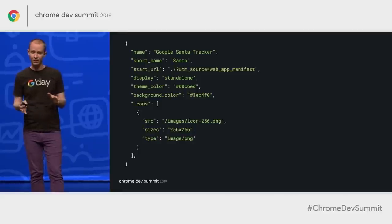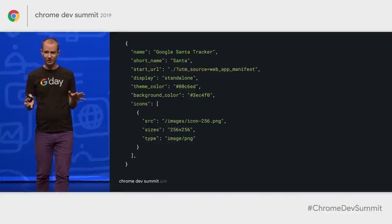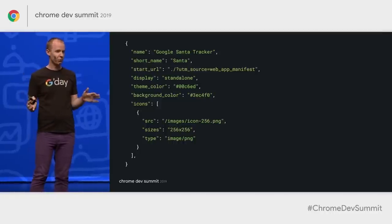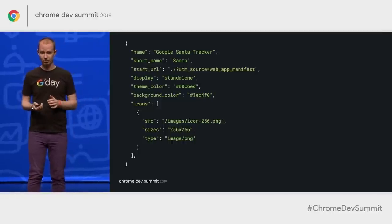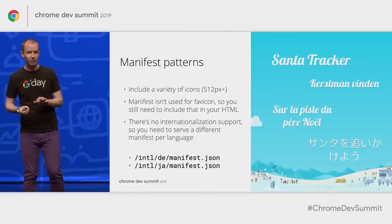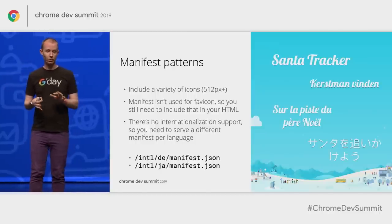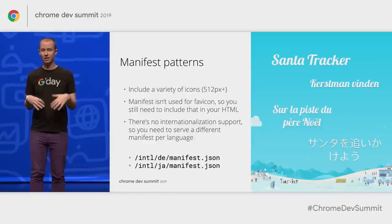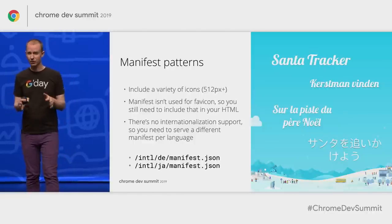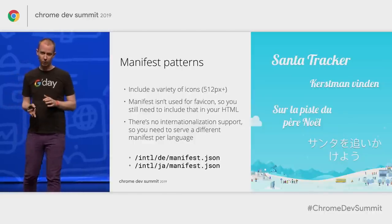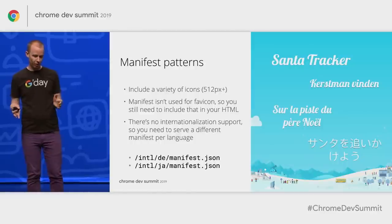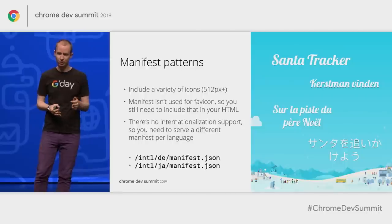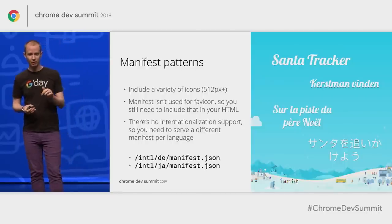The manifest itself is pretty straightforward. You need to include a few icons, including one which is at least 512 by 512. Remember that this isn't your site's favicon, so you still need to include one of those. In building Santa Tracker, one thing we discovered is that there's no implicit internationalization support — you need to serve a different manifest for every language.